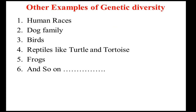Other examples of genetic diversity include human races. The African human being, though sharing a common ancestor, differs from European or Asian races. Even the dog family with a common ancestor shows a variety of forms. Reptile species like turtle, tortoise, and freshwater terrapins — even though they possess a common ancestor — their adaptation to a particular environment reflects the particular species. Frogs also show a variety of forms.